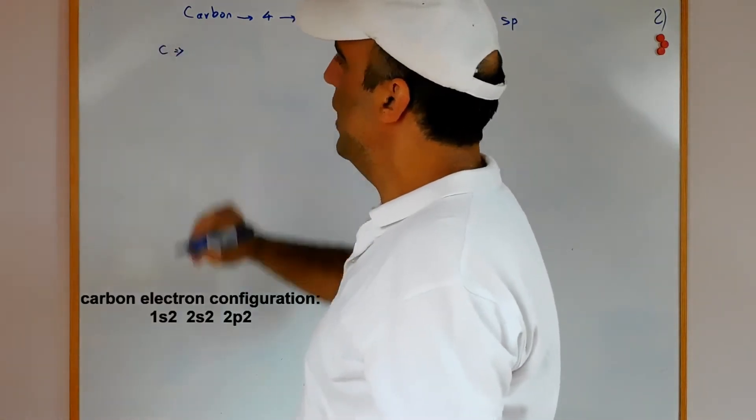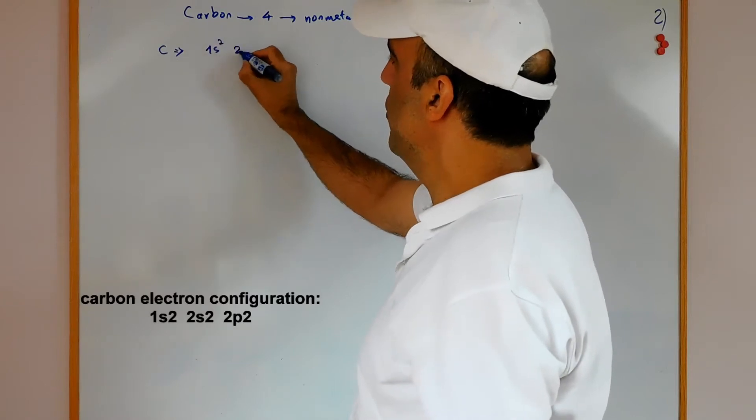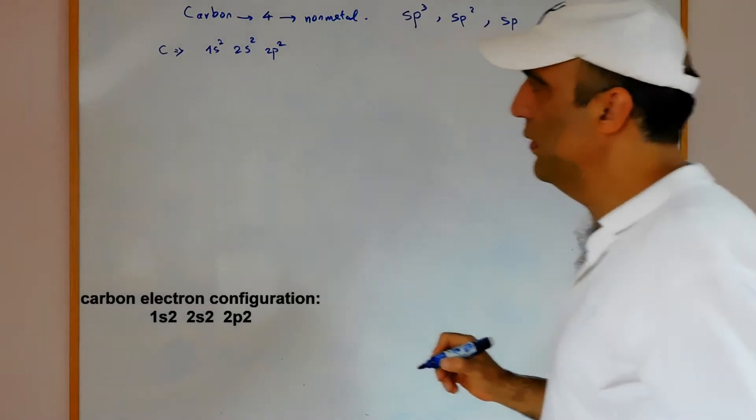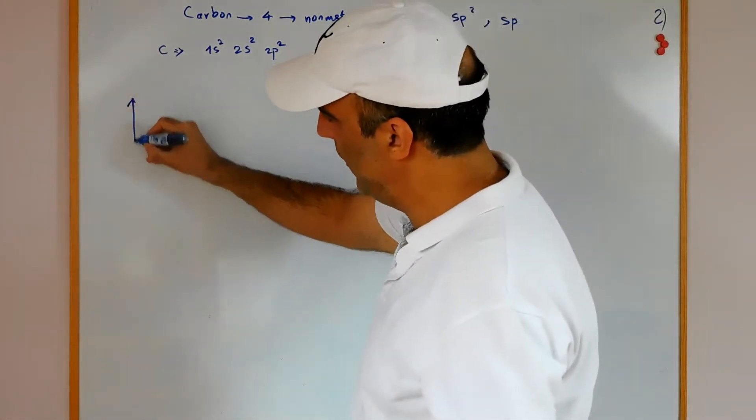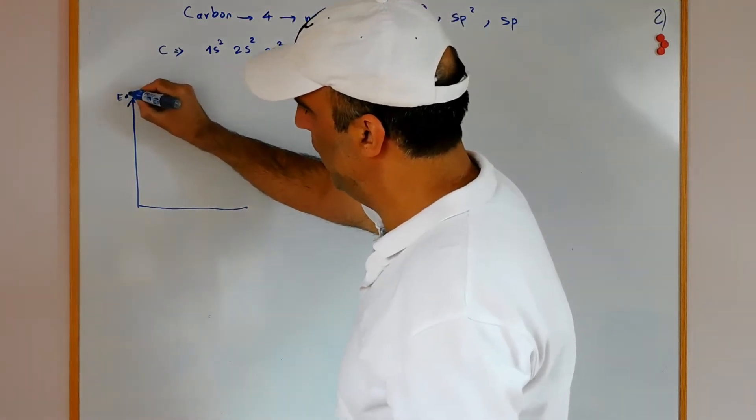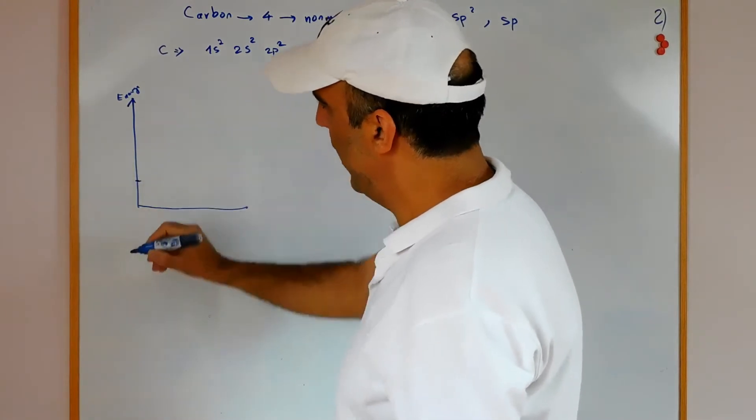Carbon electron configuration is 1s2, 2s2, and 2p2. As you see the energy level, if you state energy level for example...